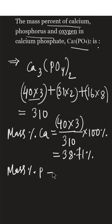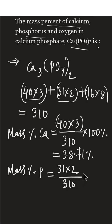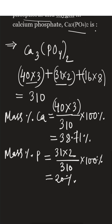We can also calculate the mass percentage of phosphorus. The amount of phosphorus is 31 × 2, divided by the total molar mass of 310, multiplied by 100%. The mass percentage of phosphorus equals 20%.